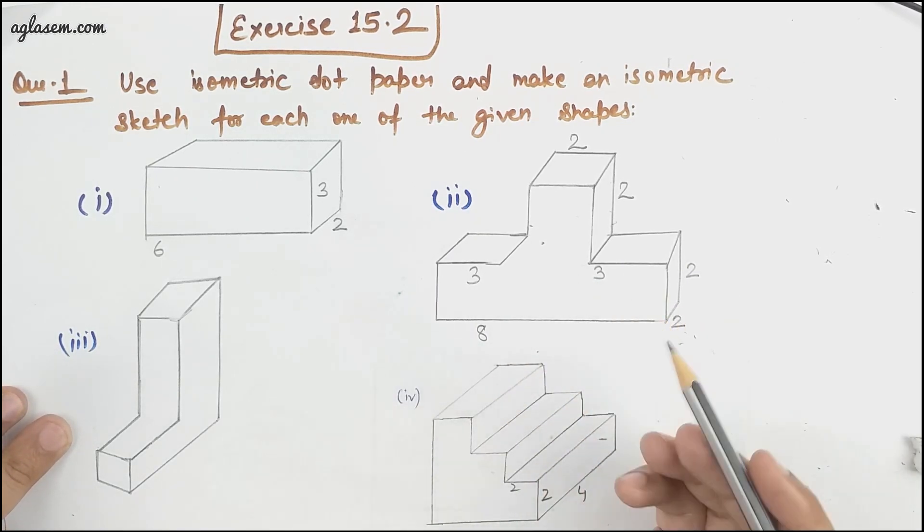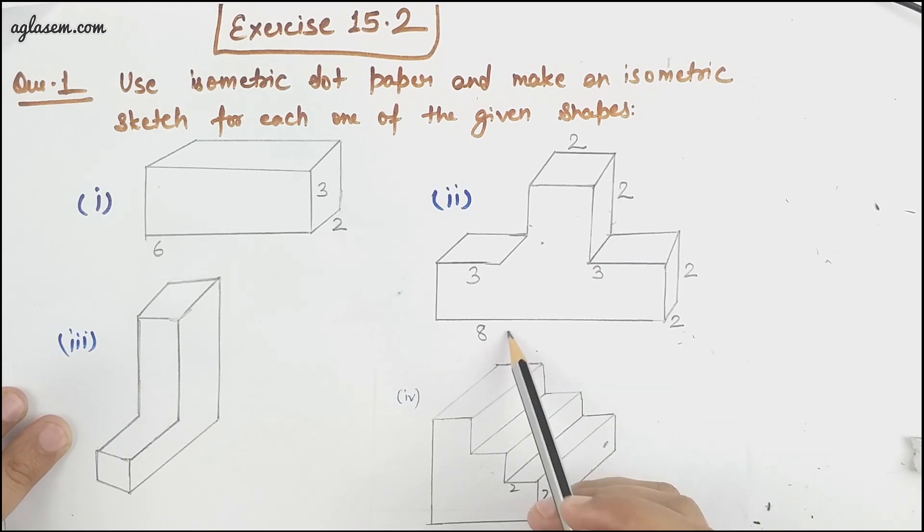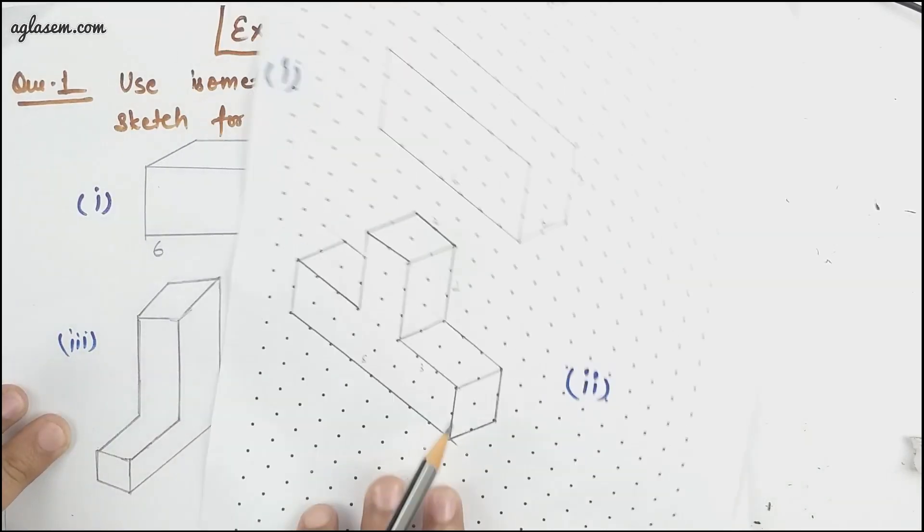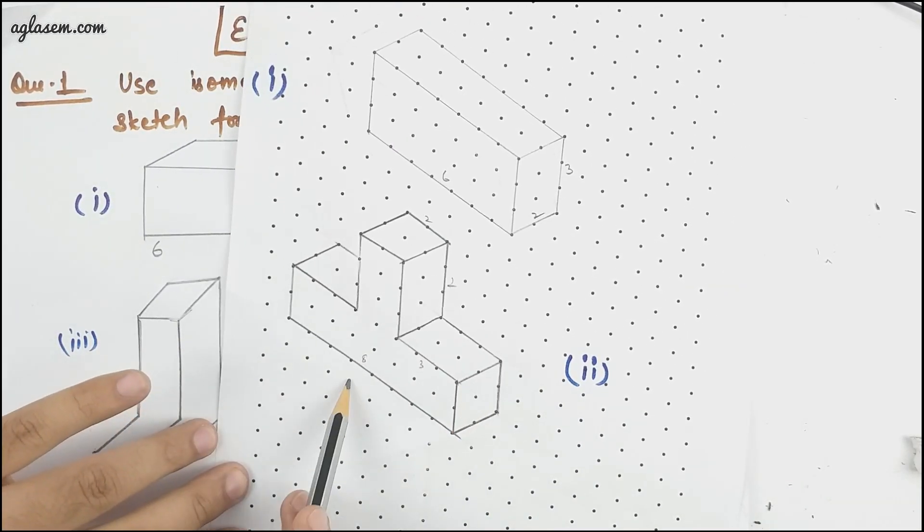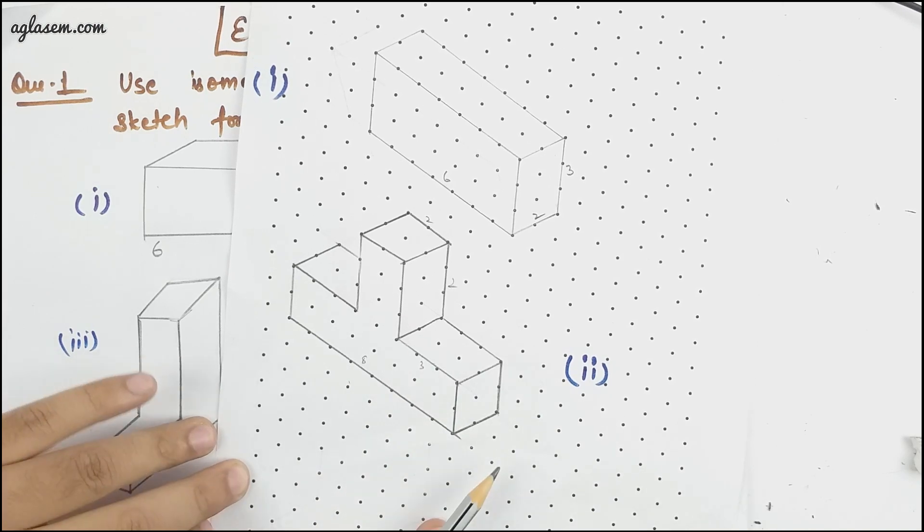Two this side, two this side, three this side, eight this side. So this is how it will look like eight, three and two. Coming to part C that is the third part here, the dimensions were missing so it will look like this.